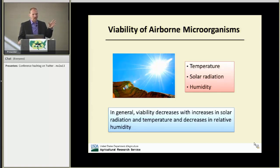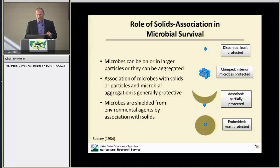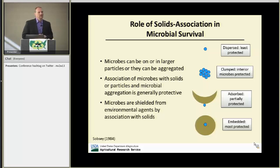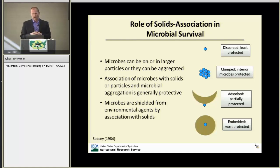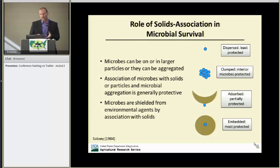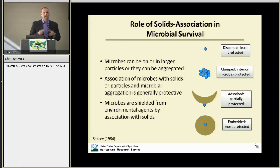Individual airborne bacteria are very susceptible to meteorological factors. If they're clumped, they're going to be a little less susceptible, especially the microorganisms in the center of the clump. Biological particles can also be associated with dust particles — if they're on the outside of the dust particle, they're partially protected, and if embedded in the middle of a solid particle, they're really well protected from UV, temperature, and moisture fluctuations.